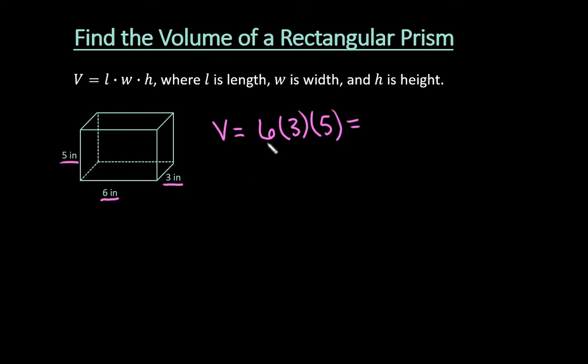When I'm multiplying in my head, I always look at the values to see if there's something that would make it easiest. I would do the six times five first, which would give us 30, and then take 30 times three, and that would give us 90.